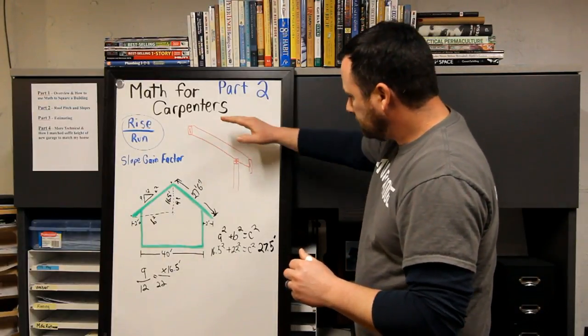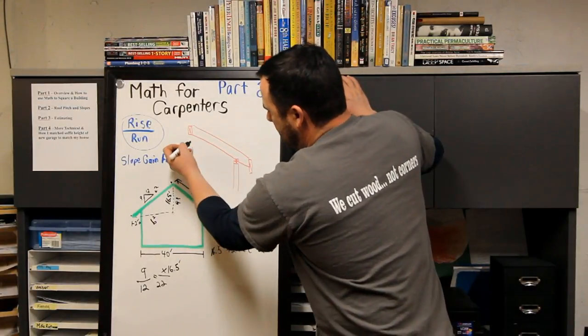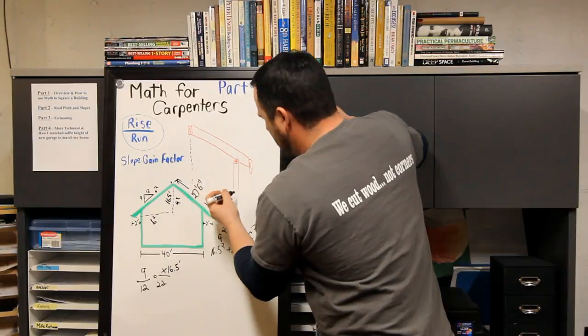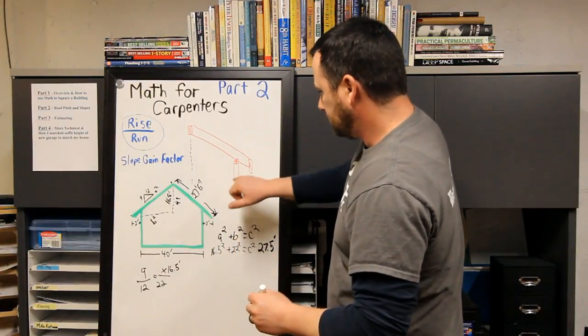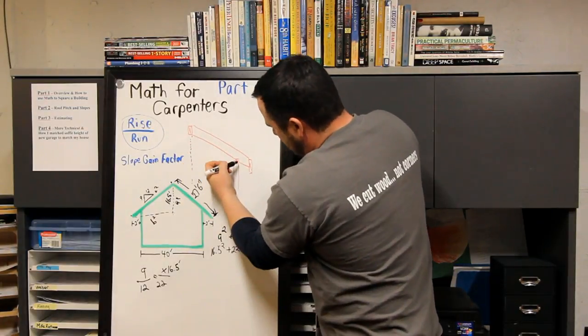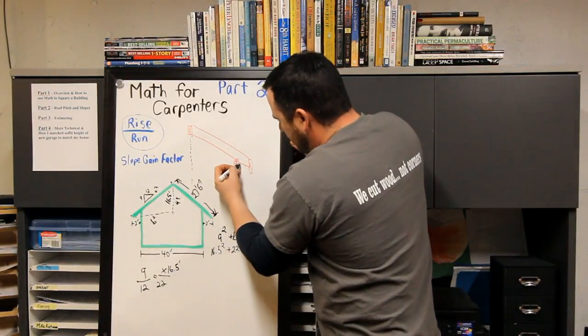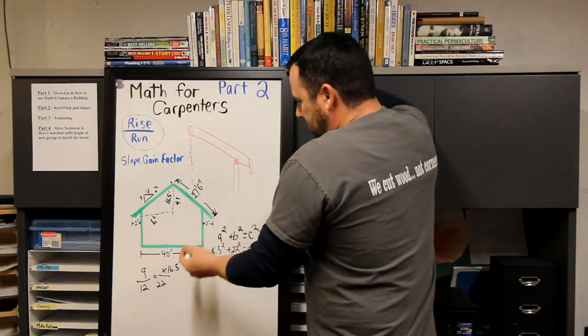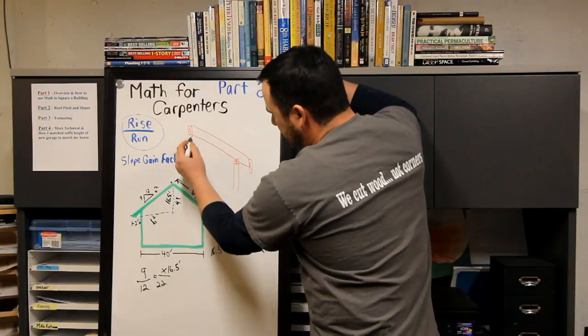Let's use the same numbers based on here. So I'm 40 feet wide, I'm 20 feet from the center to the outside of my wall. Using the slope gain factor, and you could also use Pythagorean theorem, you can figure out exactly based on math the length from here to the outside of your bird's mouth. You know that length, then based on your overhang you can figure out that length.